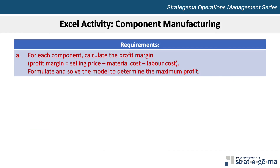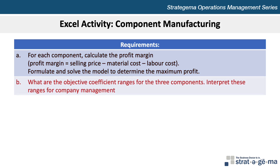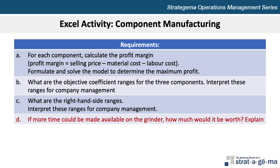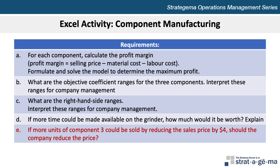Requirement A: For each component, calculate the profit margin, where profit margin equals the selling price minus material cost minus labor cost, and then formulate and solve the model to determine the maximum profit. Requirement B: What are the objective coefficient ranges for the three components, and interpret these ranges for company management. Requirement C: What are the right-hand side ranges, and interpret these ranges for company management. Requirement D: If more time could be made available on the grinder, how much would it be worth? Explain. And Requirement E: If more units of Component 3 could be sold by reducing the sales price by $4, should the company reduce the price?